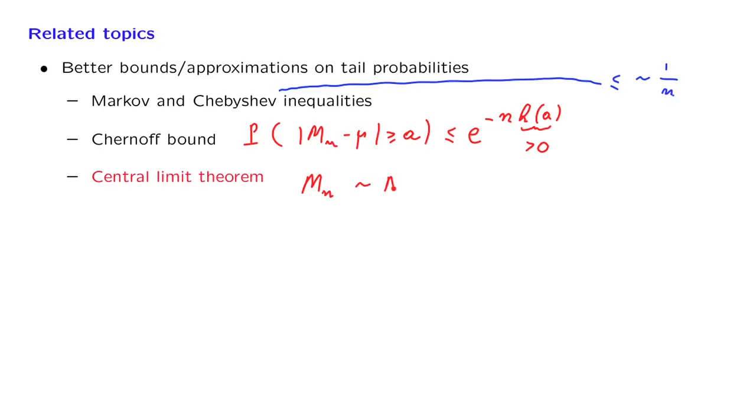behaves as if it were a normal random variable with the mean and the variance that it should have. We know that this is the mean and the variance of the sample mean, but the central limit theorem tells us that in addition to that, we can also pretend that the sample mean is normal and carry out approximations as if this were a normal random variable.